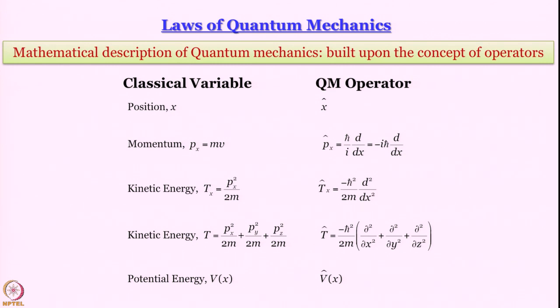And these operators were worked out. Again, operator algebra is something that was developed by the time that was used in this context. And these are the operators, some quantum mechanical operators that you see for different classical variables.